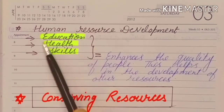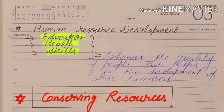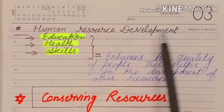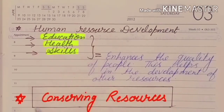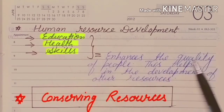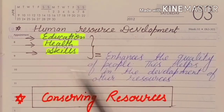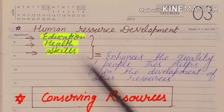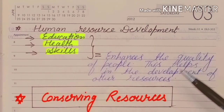The third factor is health. For example, some people have skills, technology, knowledge, and intelligence, but if they don't have good health they cannot contribute effectively. There are three factors for human resource development: education, health, and skills. These enhance the quality of people and help in the development of other resources.